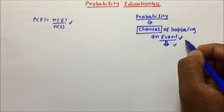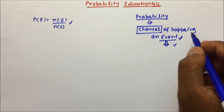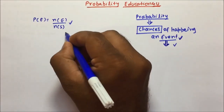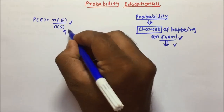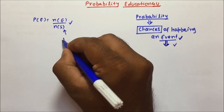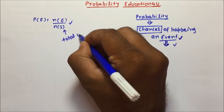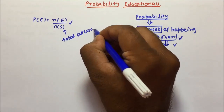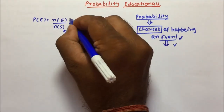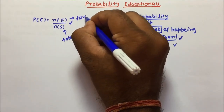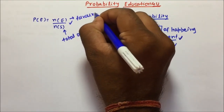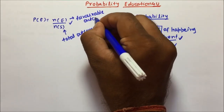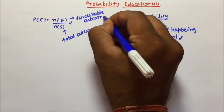By definition, it should be clear. Now, probability will be equal to NE divided by NS, where NS will be the total outcomes and NE will be the favourable outcome.